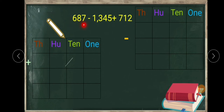Let's move to another example. The given question is six hundred and eighty seven, minus one thousand three hundred and forty five, plus seven hundred and twelve. As per the rule, we have to add the number with the addition symbol first. Here, the number with the addition symbol is seven hundred and twelve. We need to add seven hundred and twelve to the first number, six hundred and eighty seven.